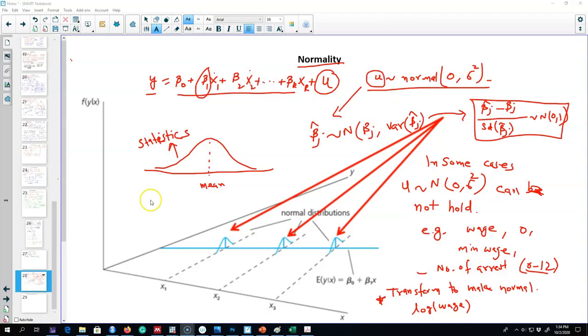I said that these residuals are normally distributed around mean zero with constant variance sigma squared. If the normality of these residuals is established, then these beta coefficients are also normally distributed around the population mean beta j and the variance of the estimated coefficient.